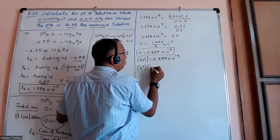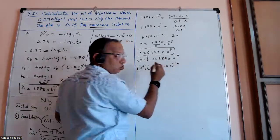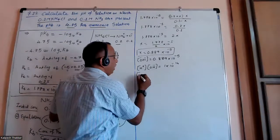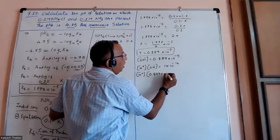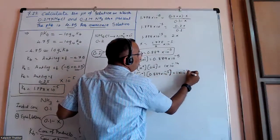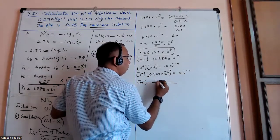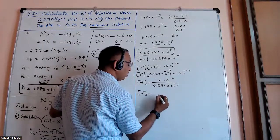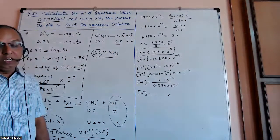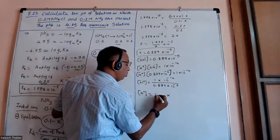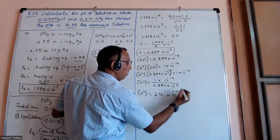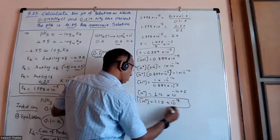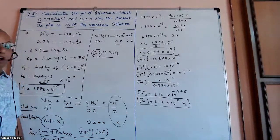Using the ionic product of water: H⁺ times OH⁻ equals Kw equals 1 × 10⁻¹⁴. With OH⁻ equal to 0.889 × 10⁻⁵, we get H⁺ equals 1 × 10⁻¹⁴ divided by 0.889 × 10⁻⁵. Dividing 1 by 0.889 gives 1.12, and 10⁻¹⁴ divided by 10⁻⁵ gives 10⁻⁹. So the concentration of H⁺ is 1.12 × 10⁻⁹.